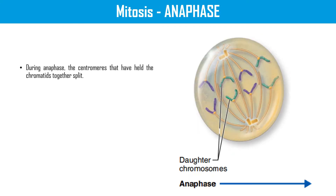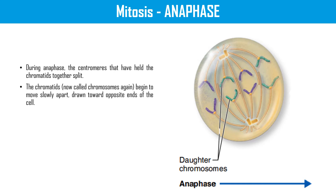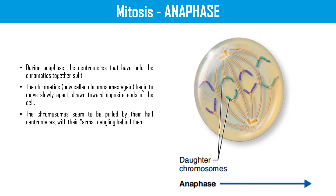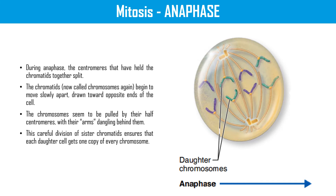During anaphase, the centromeres that have held the chromatids together split. The chromatids, now called chromosomes again, begin to move slowly apart, drawn towards the opposite ends of the cell. The chromosomes seem to be pulled by their half-centromere with their arms dangling behind them. This careful division of sister chromatids ensures that each daughter cell gets one copy of every chromosome. Anaphase is over when the chromosomes stop moving.